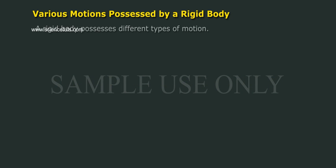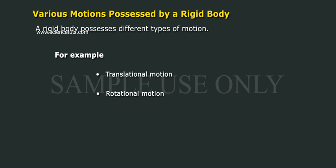Various motions possessed by a rigid body. A rigid body possesses different types of motion, for example: translational motion, rotational motion, and combination of translational and rotational motion.